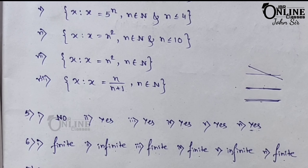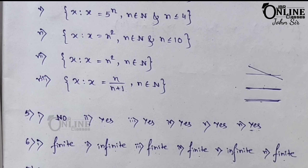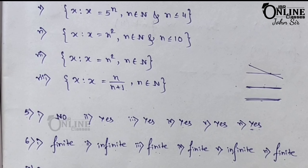Set of all vowels in the word 'principle'. How many vowels are there? Only two — I and E. So the cardinal number is 2.